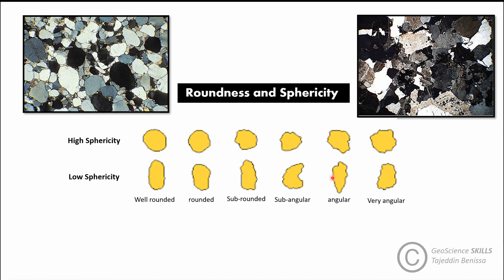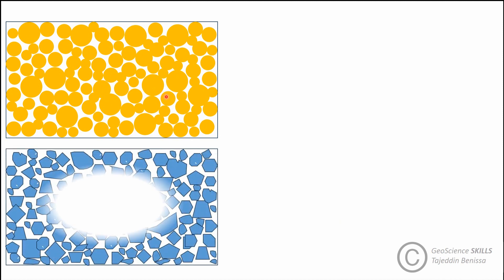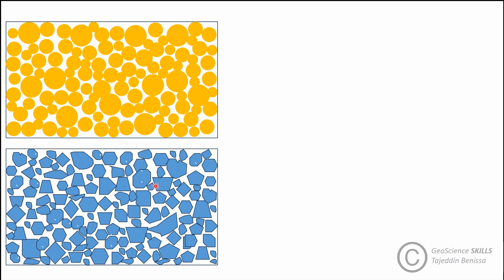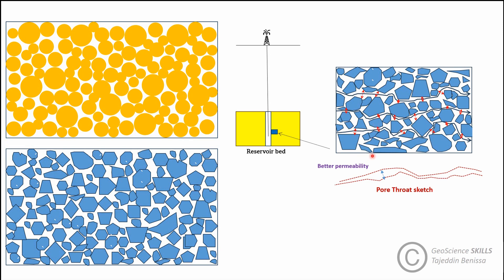Grain shape is another important texture parameter that should be examined carefully. Rounded grains indicate transportation away from the source, while angular grains indicate deposition close to the source. In clean sandstone, rounded grains preserve intergranular porosity at a certain level. In angular-grain sandstone, the angularity can have a positive impact on reservoir quality by increasing primary porosity and hence permeability. This is because the angularity of grains irregularly modifies the geometry of intergranular pores, enabling pores of different radii to connect and form a complex, dense network of pore throats, which in turn enhances permeability.